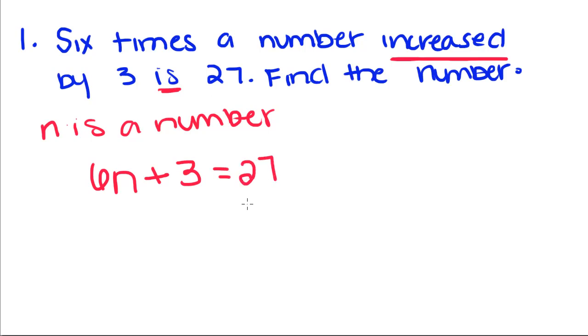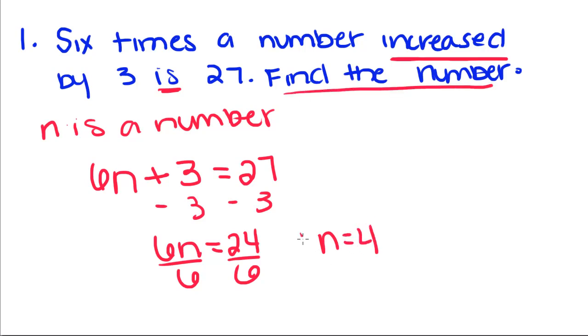So equals 27. I'm going to subtract 3 over, and we get 6n equals 24. Divide by 6, n equals 4. And once again it says find the number, so this is our final answer.